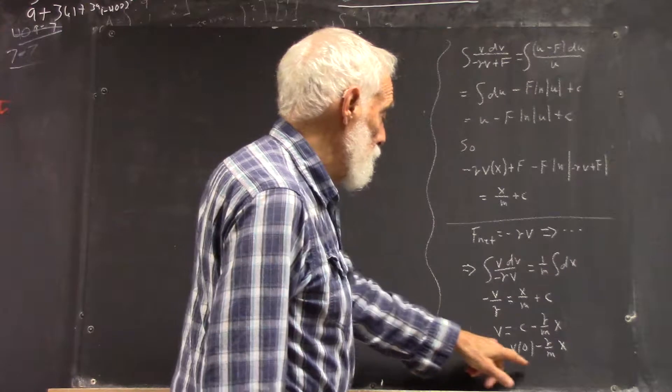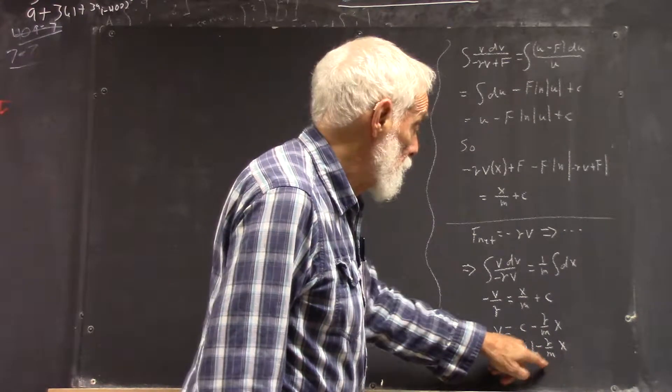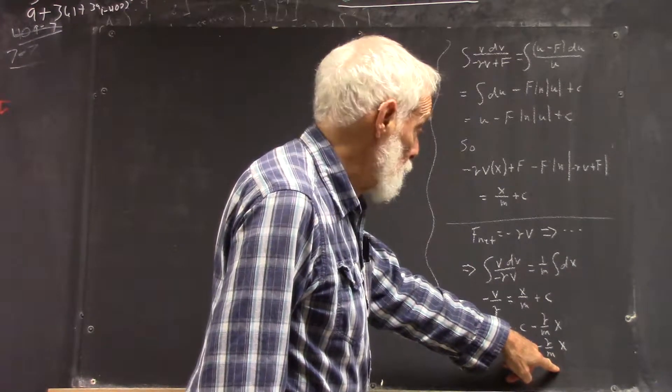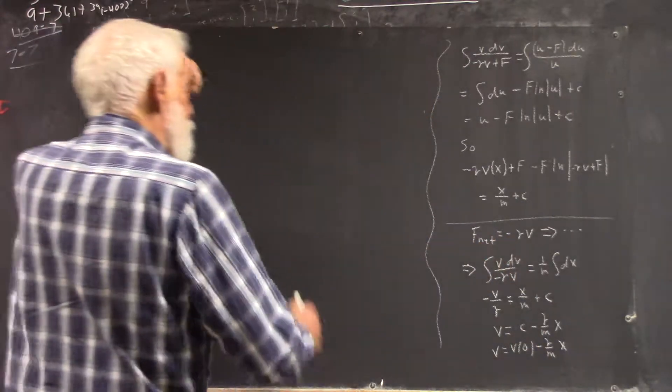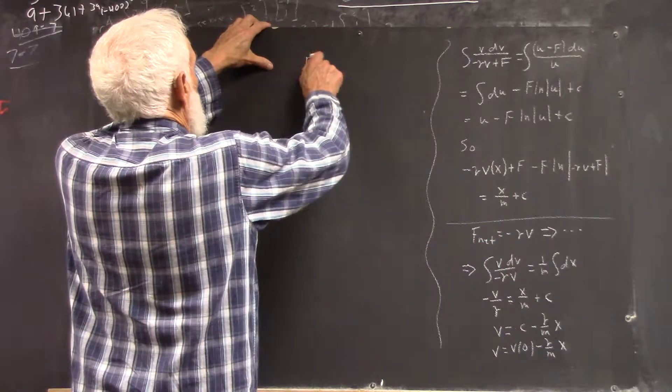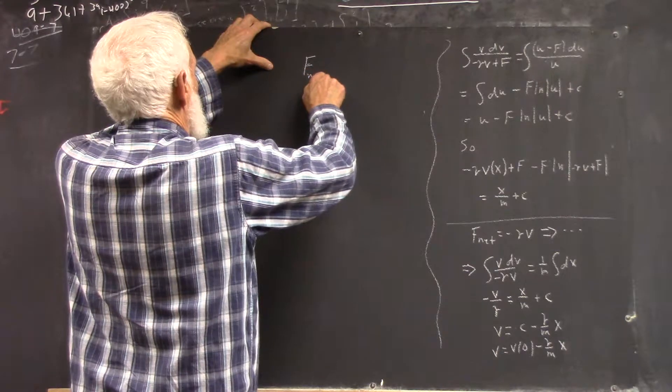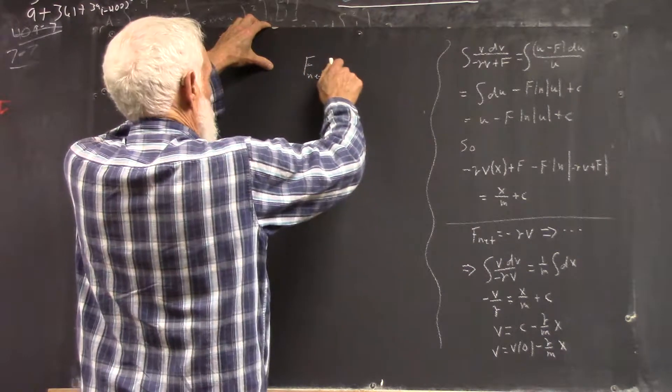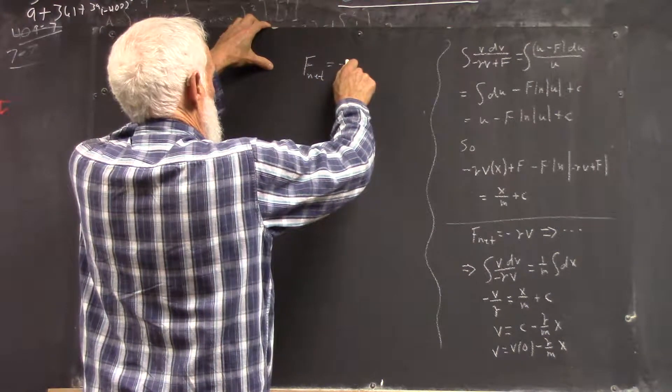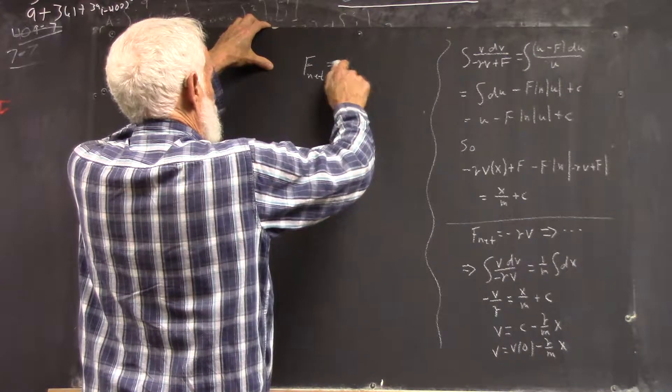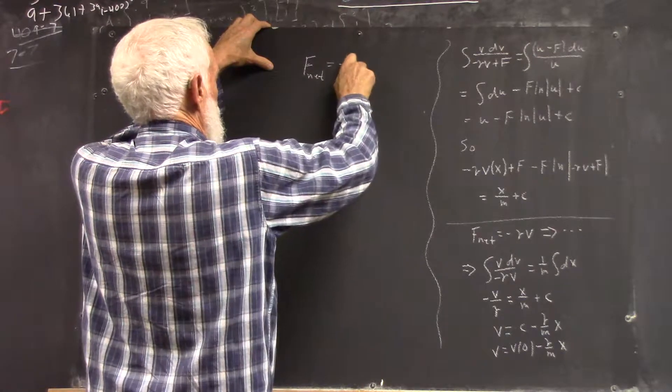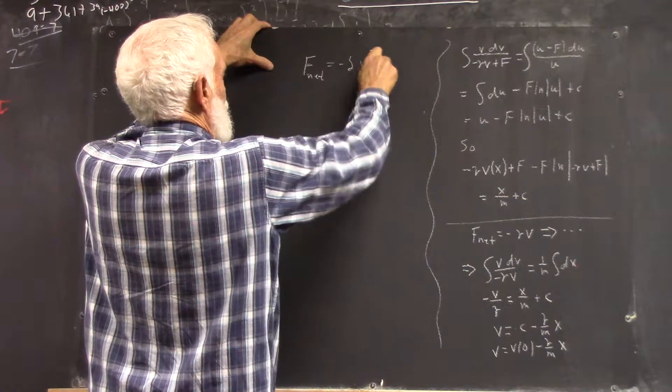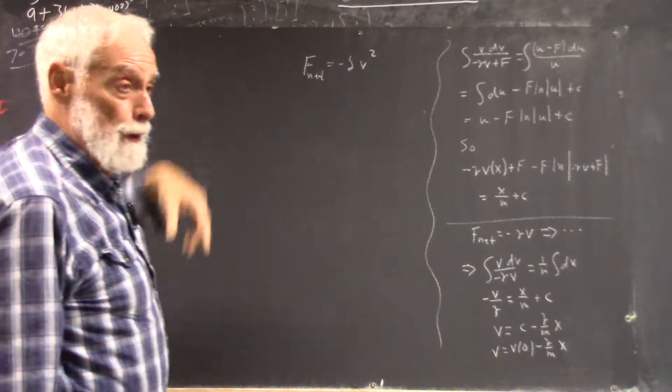Linear in x. If we have, actually probably the more common, I don't like to use k, they like to use k, I'm going to use delta, lowercase delta, v squared, okay?